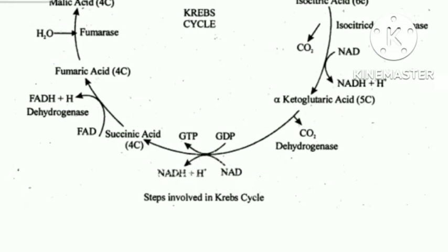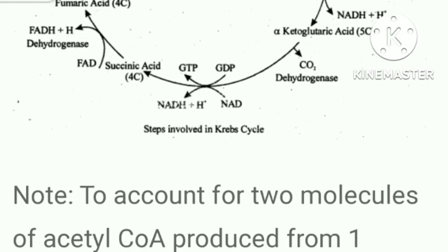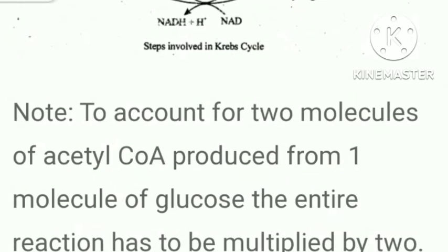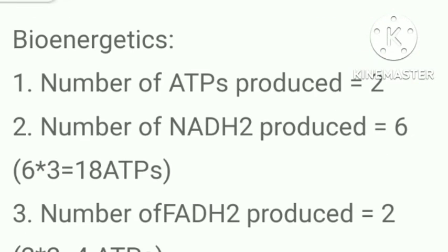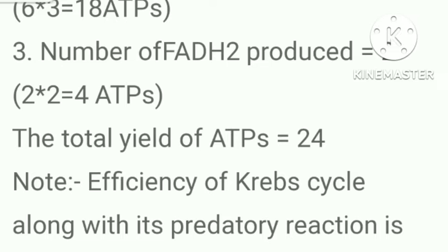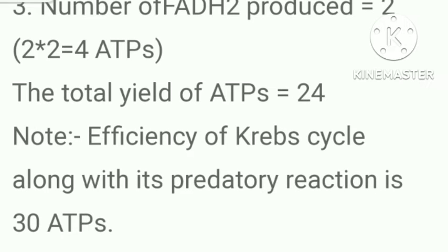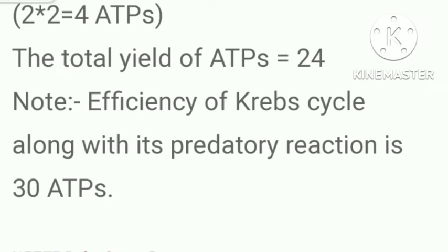Steps involved in Krebs cycle and bioenergetics. To account for two molecules of acetyl-CoA produced from one molecule of glucose, the entire reaction has to be multiplied by two. Number of ATPs produced = 2; number of NADH₂ produced = 6 (6 × 3 = 18 ATPs); number of FADH₂ produced = 2 (2 × 2 = 4 ATPs); total yield of ATPs = 24. Efficiency of Krebs cycle along with its preparatory reaction = 30 ATPs.